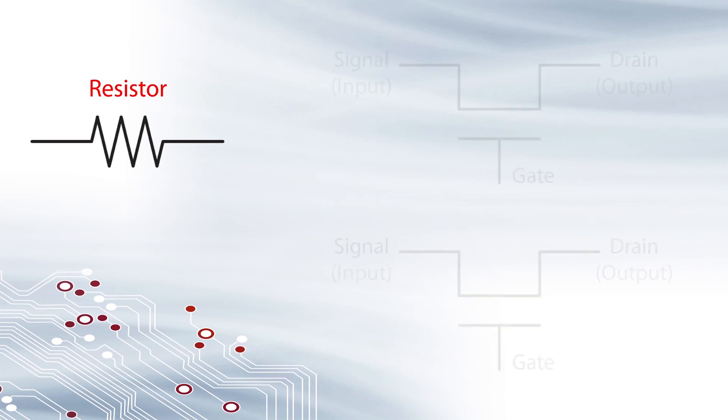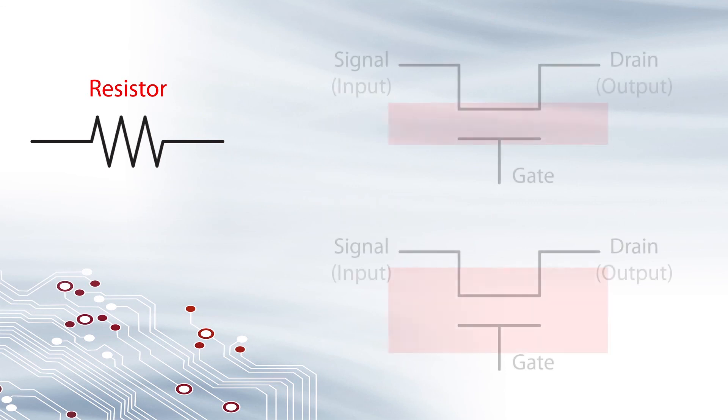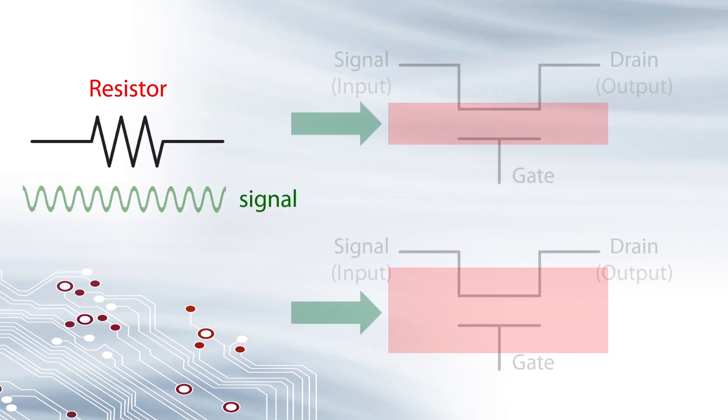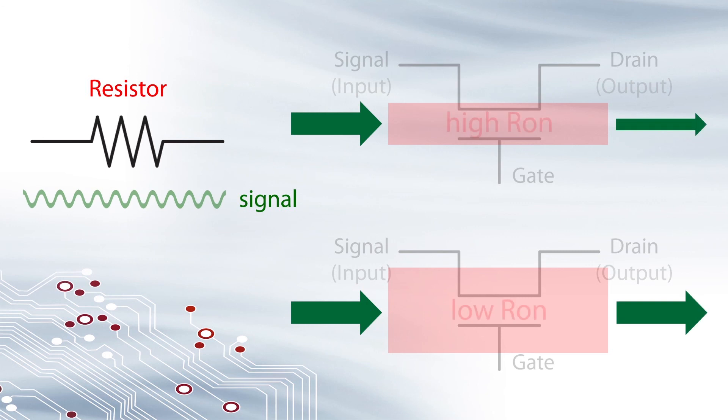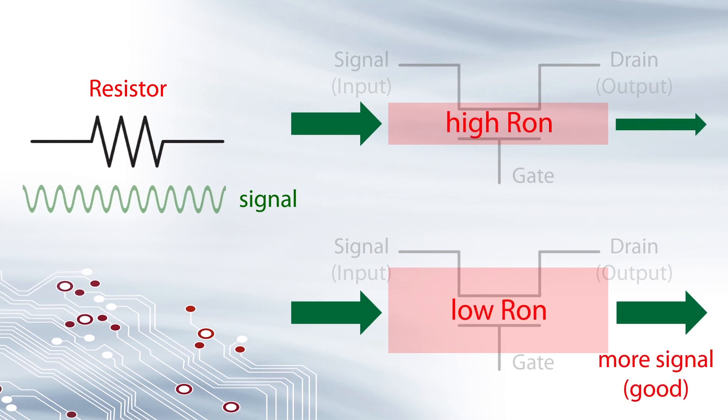R on is inversely proportional to the width of the transistor. The wider the transistor, the lower the resistance, which allows more of the signal to get through.